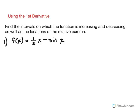Hi everyone. Let's take a look at a couple of examples in which we are going to determine where a given function is increasing and decreasing, as well as the locations of the relative extrema. So let's start with a trig function, and this one is supposed to be on the interval from 0 to 2 pi.